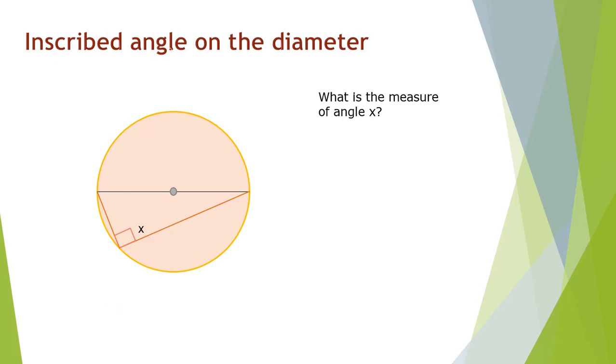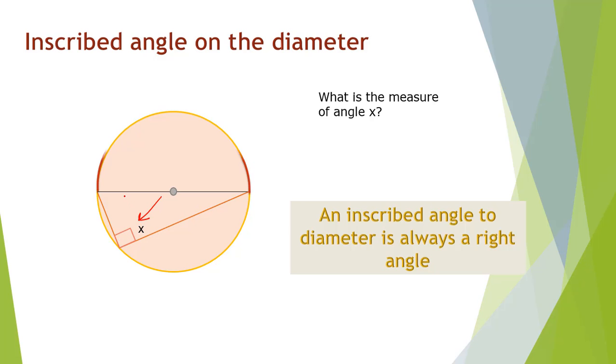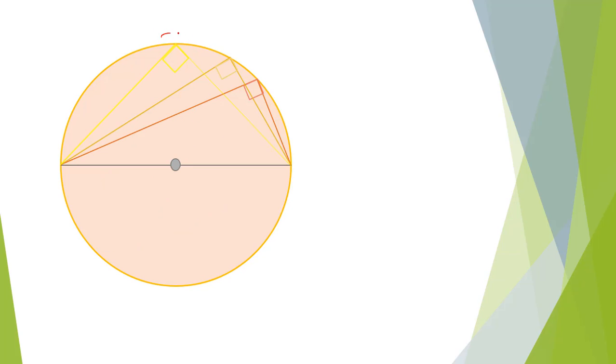Inscribed angle on the diameter. An inscribed angle drawn to circles diameter is always a right angle. You can see that this diameter has an arc that measures 180 degrees. The central angle is now 180 degrees. So half of 180 is 90 degrees. Whatever point you take, the angle would be 90 degrees.